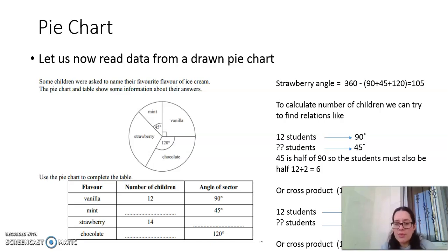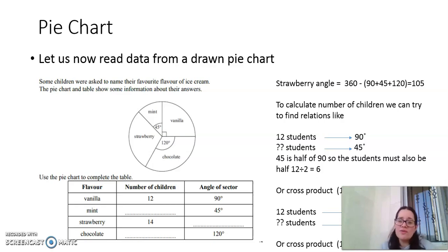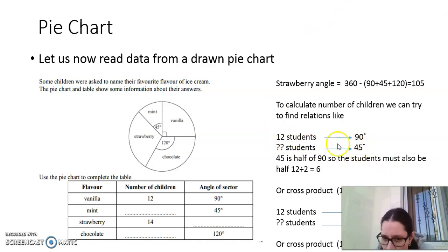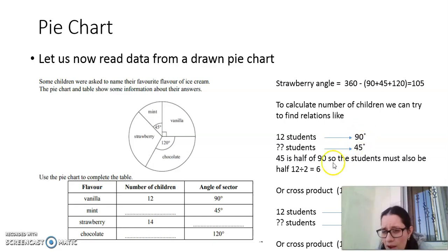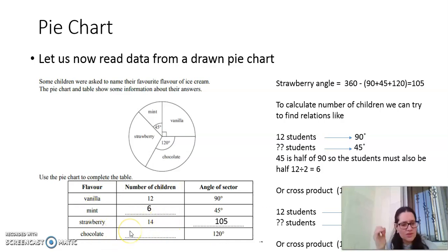To calculate the number of children for mint and chocolate, we use what is called the cross-product method. We multiply the values in the diagonal that contains known values, then divide by the value in the other diagonal containing the unknown. In our case, the known values are 12 students and 45 degrees, so 12 times 45 divided by 90 gives 6. So 6 children like mint.